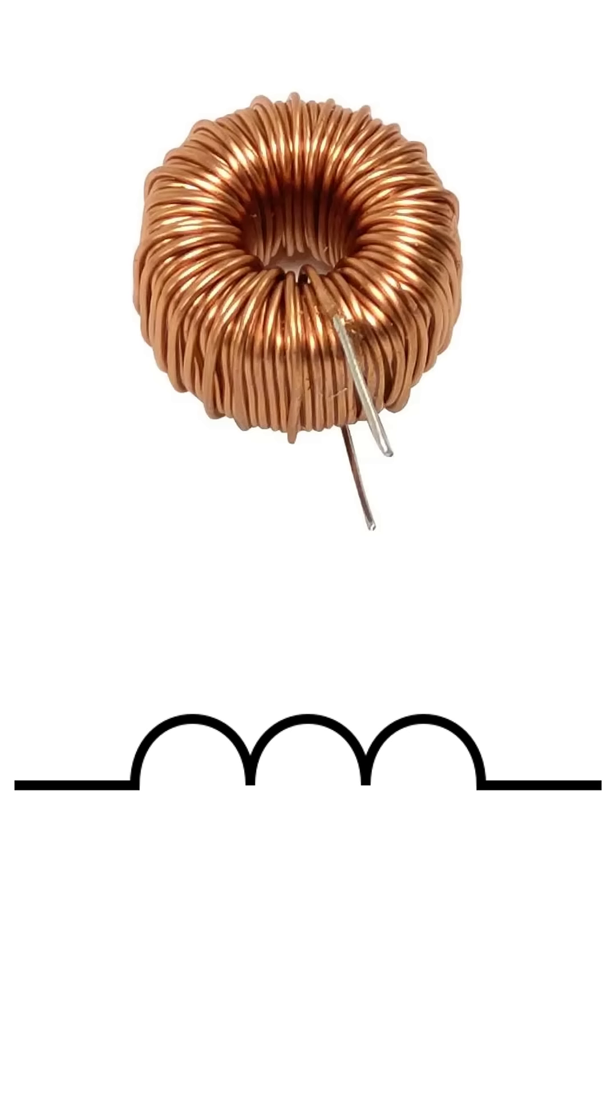The word toroidal comes from the word torus, which means a donut-shaped ring. In this image, you can see copper wire wound tightly around a circular core. That core is usually made of a magnetic material, like ferrite or powdered iron.